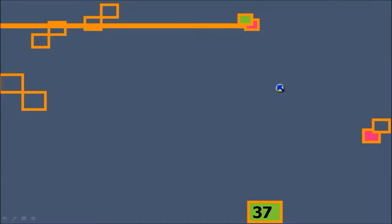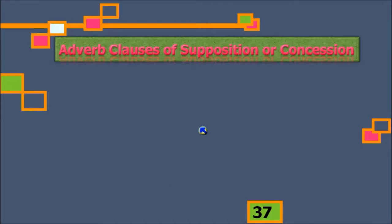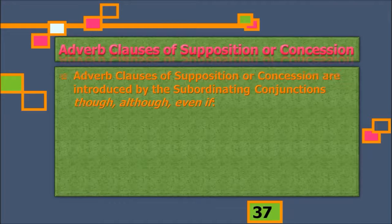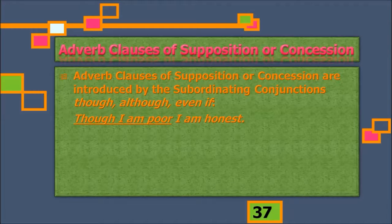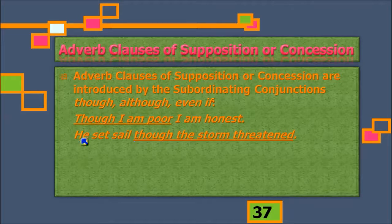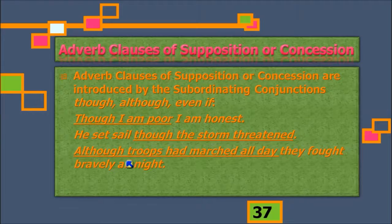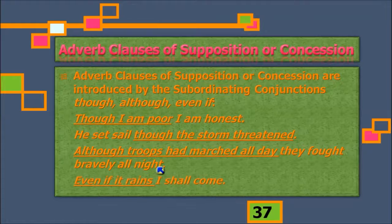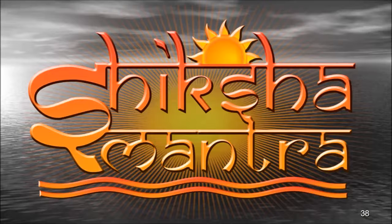Now we learn adverb clauses of supposition or concession. These are introduced by: though, although, even if. Examples: 'Though I'm poor, I'm honest' — normally we think the poor are not honest, but here the poor person is honest, making it a concession. 'Although troops had marched all day, they fought bravely all night' — marching all day yet fighting all night is a concession or supposition. 'Even if it rains, I'll come' — rain won't stop you, that's the concession.